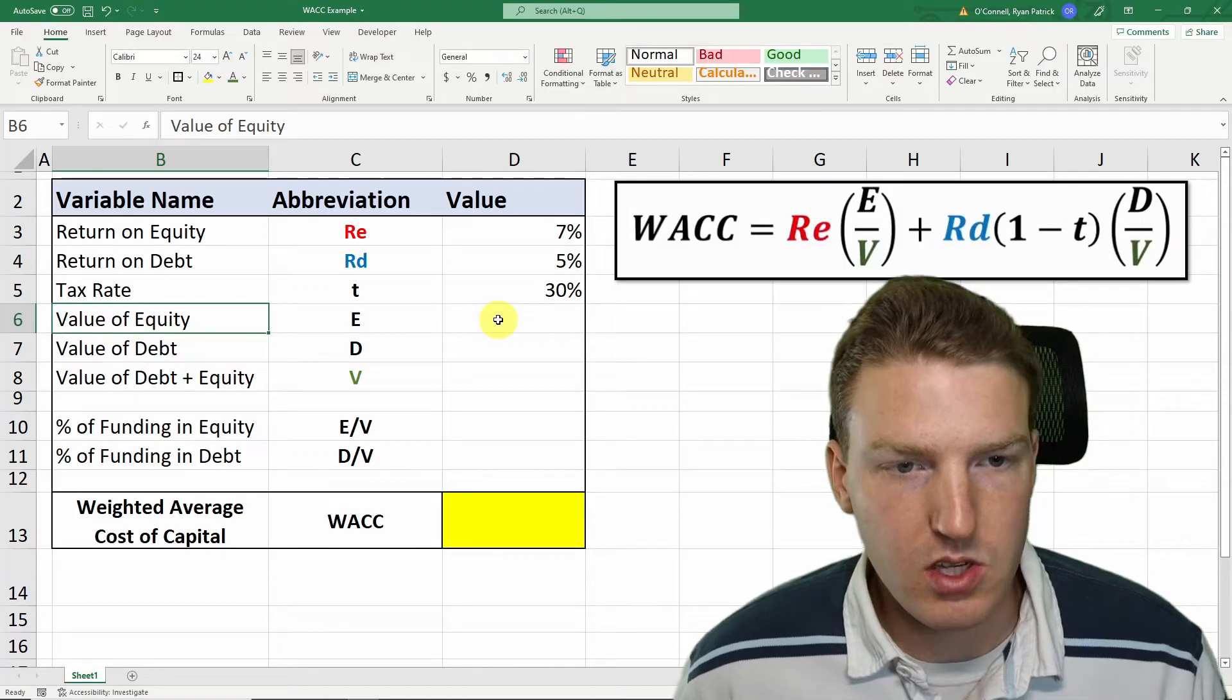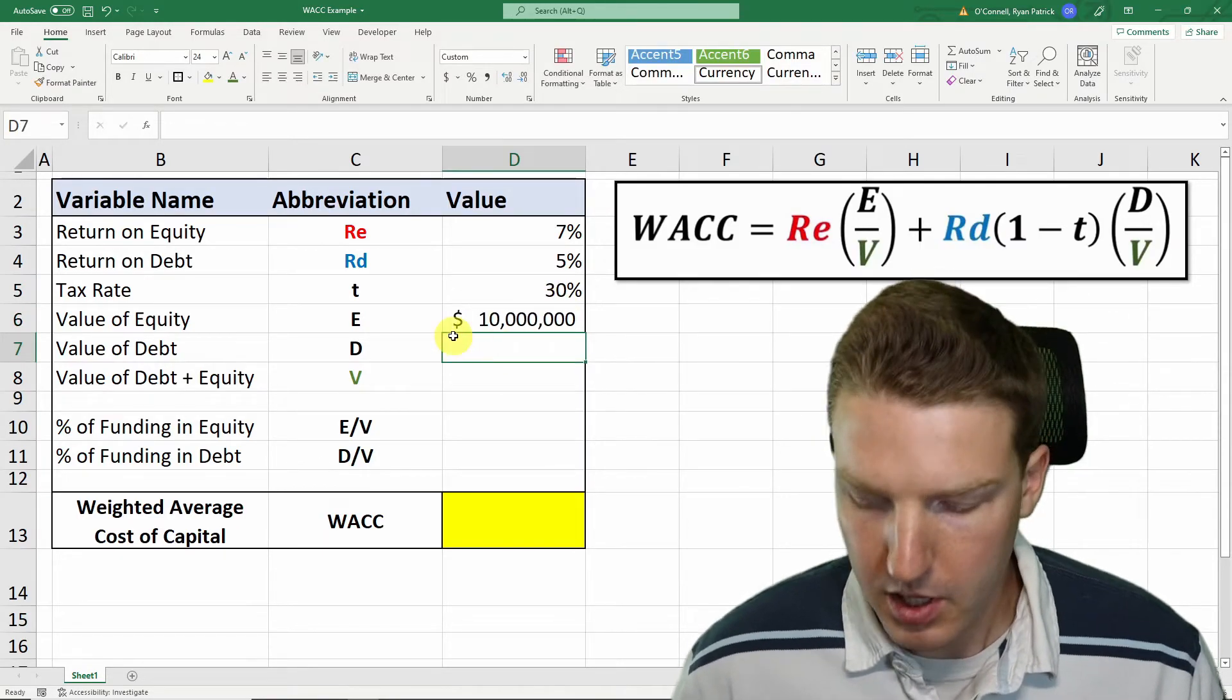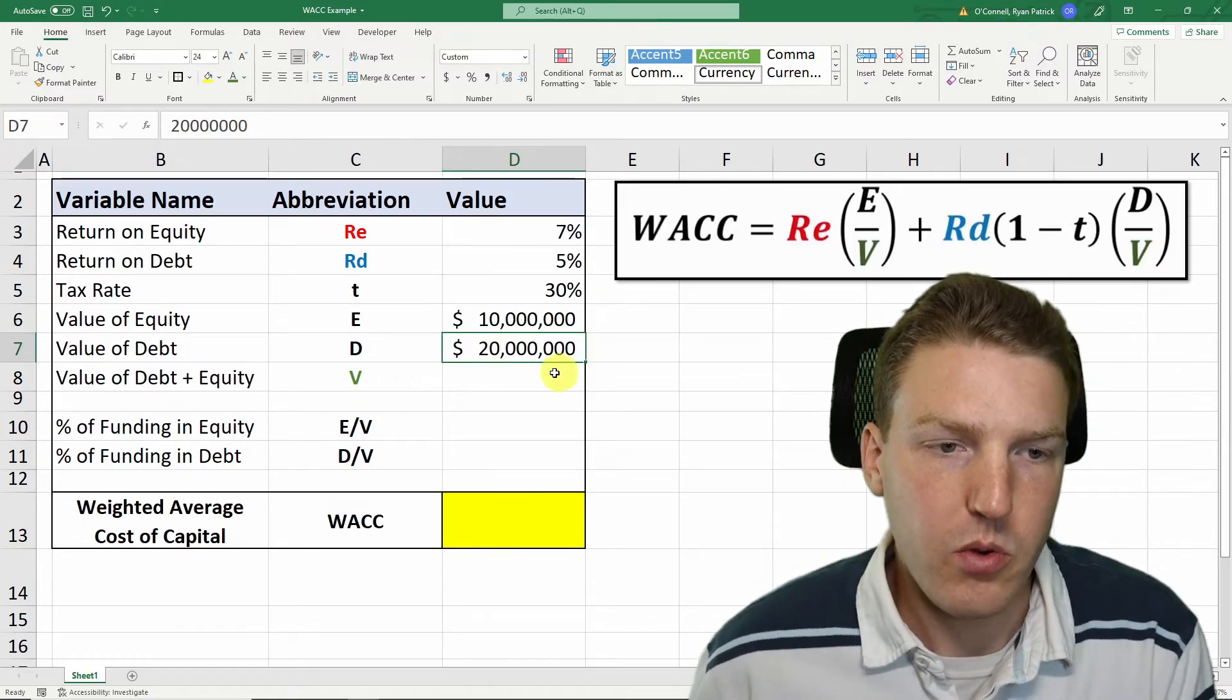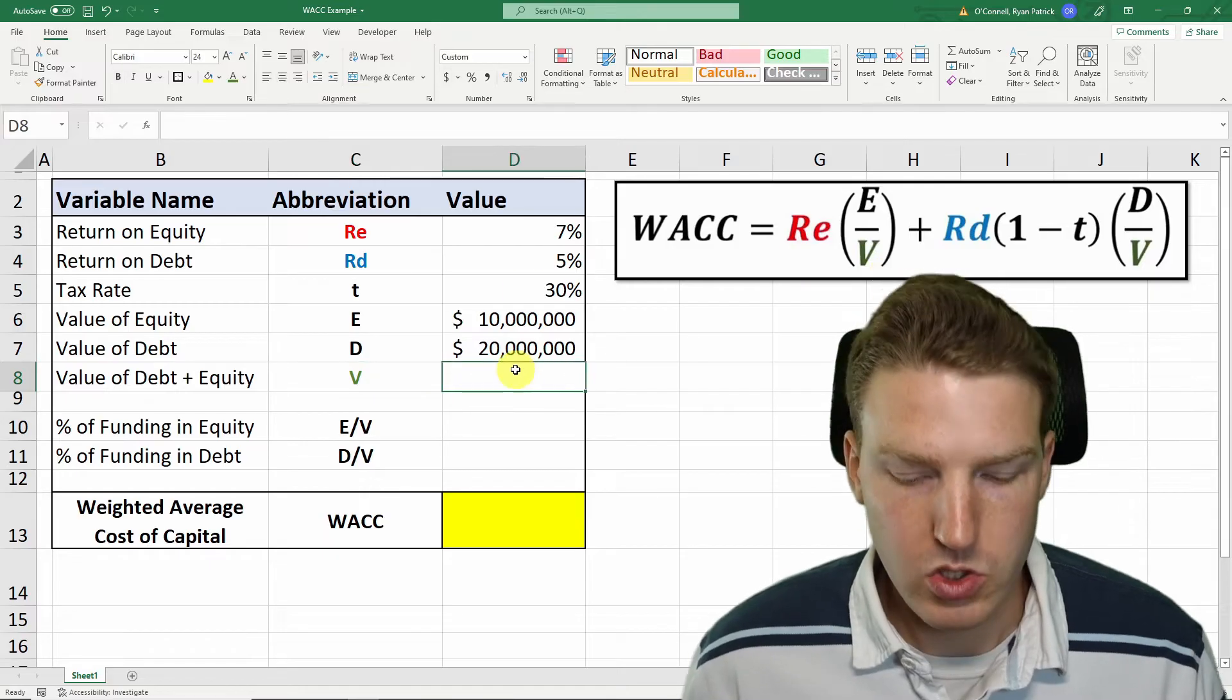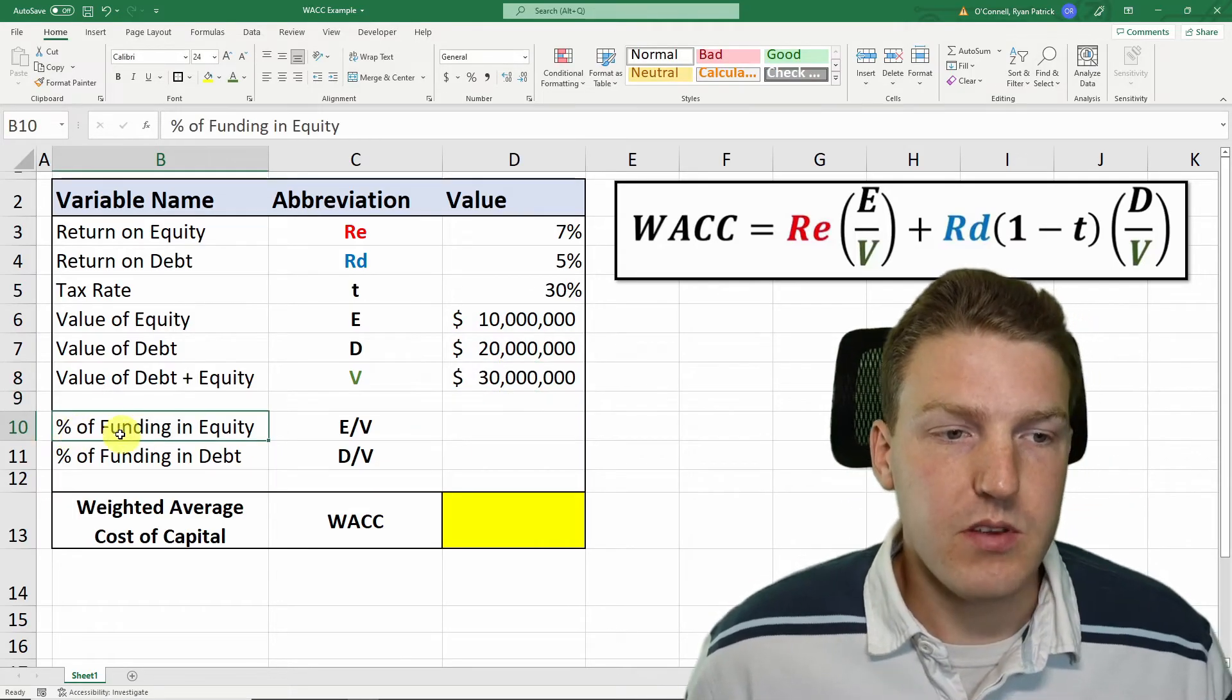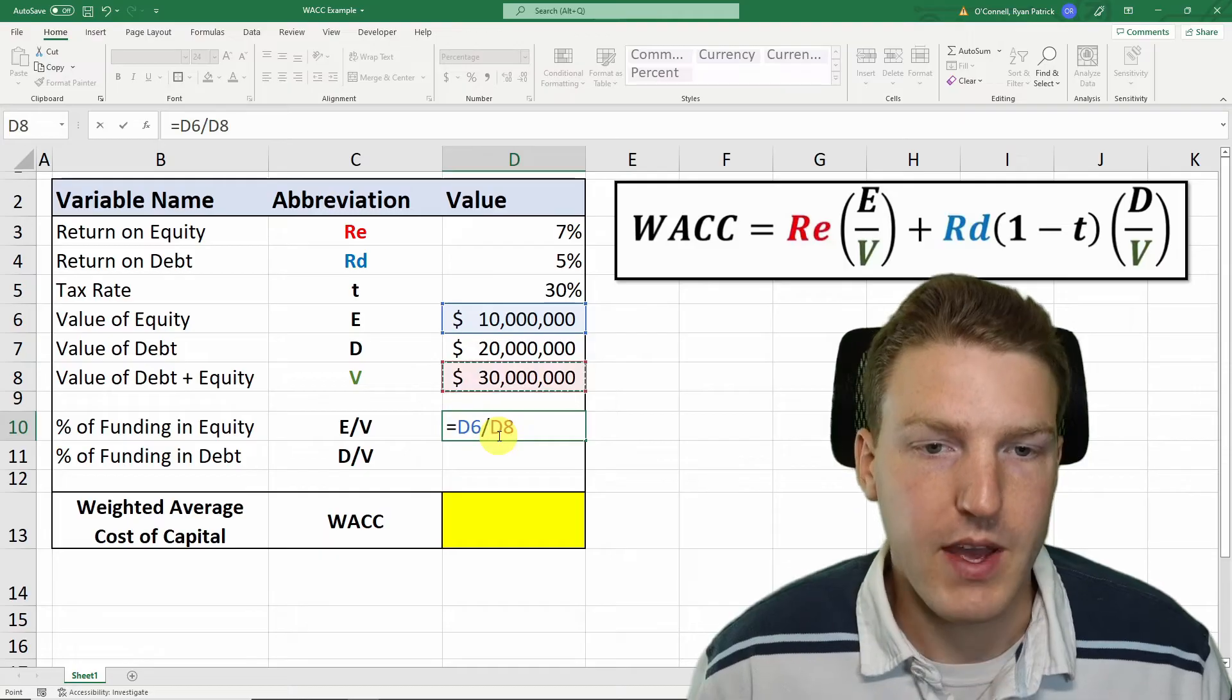We also need to consider the value of equity. Let's say hypothetically that this business has $10 million of equity ownership and $20 million of debt. We can use that to calculate the V component of this formula, which is the sum of the value of equity plus the value of debt. Now we need to find out what percent of the funding of this company is in equity, which will be equal to the total equity divided by the total amount of equity plus debt.